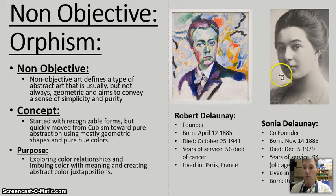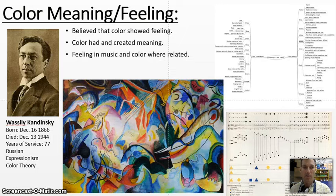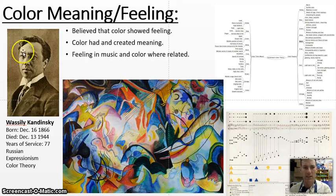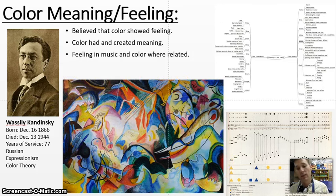He worked closely with his wife, Sonia Delaney, and they both kind of founded this idea of orphism, which was looking at and creating color. They worked alongside Vasily Kandinsky, who was very into creating meaning out of color. He had an entire philosophy and wrote a whole book about how he believed that colors could show feeling, that colors had and created meaning, and that you could actually paint a symphony based on the ideas of color relating to feelings and color relating to music.